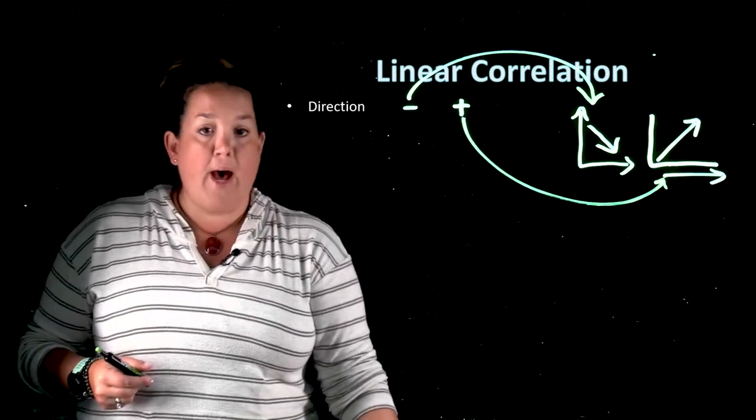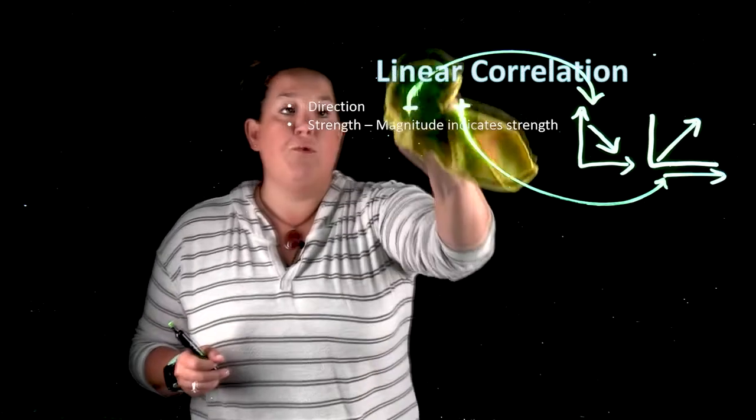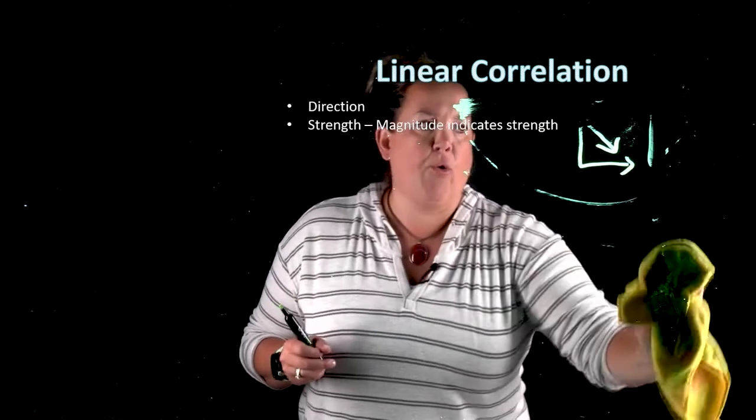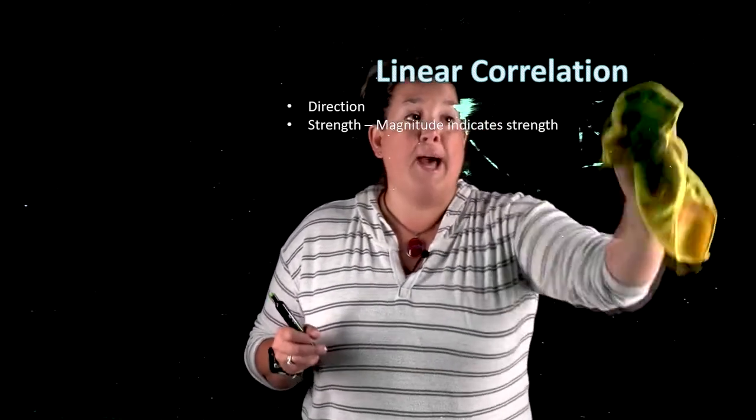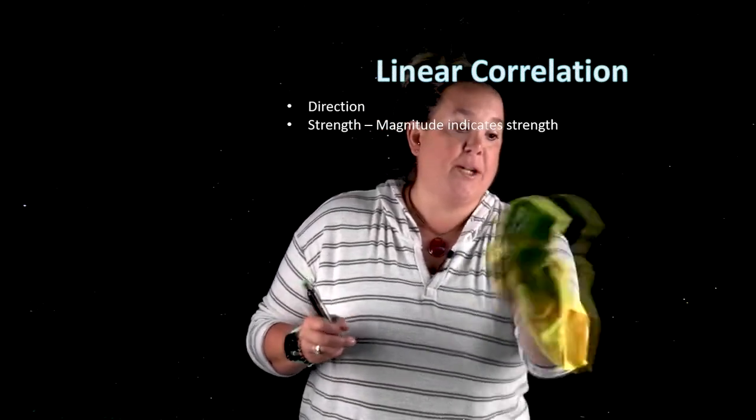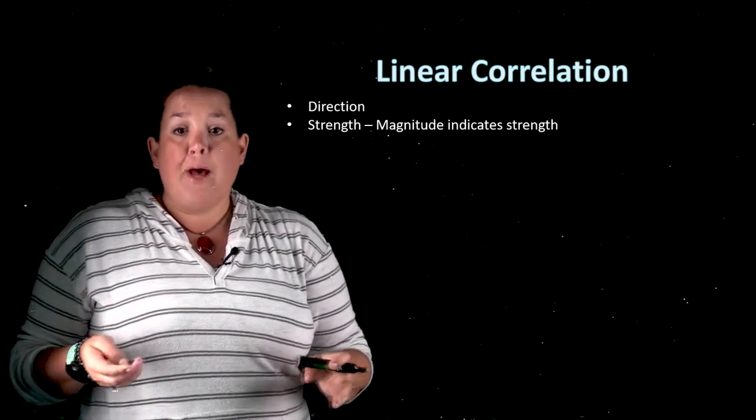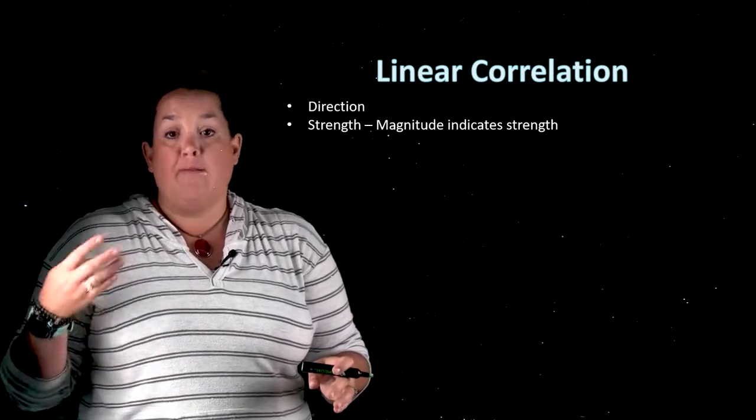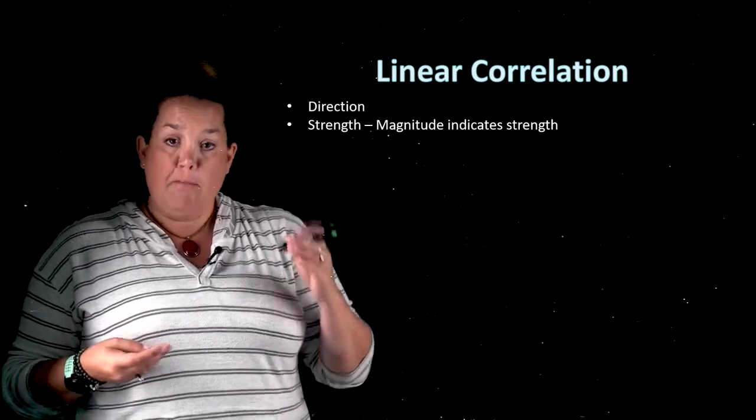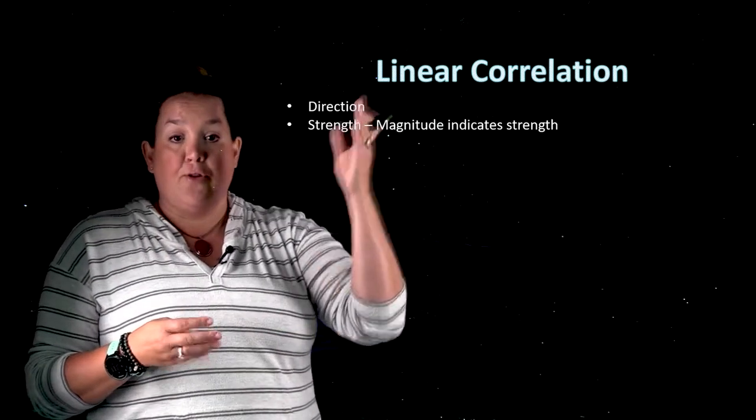Now the next thing that we have is going to be the strength. This is one thing that really can throw people because you see a negative number, you think smaller or weaker. That is not true here. A negative number only indicates the direction, and the magnitude of it, so if you were to take the absolute value, will indicate strength. So that means a correlation coefficient of negative 0.8 is just as strong as a correlation coefficient of 0.8. Those are the same magnitude. The negative is just indicating the direction.